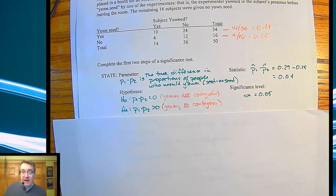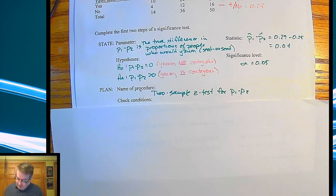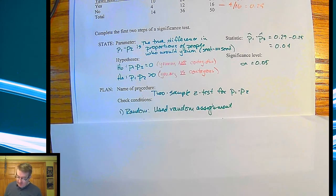Now, in terms of your plan, so that's all done with the state. For planning, we're going to do a two-sample Z test for P1 minus P2, difference of proportions. For this, you need to check your conditions. Is it random? They used random assignment. People came in, they alternated them all up. 34 of them got the seed, 16 of them did not.